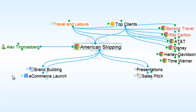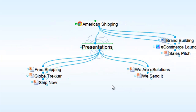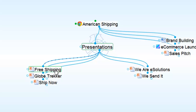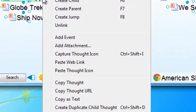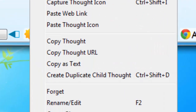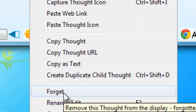In addition to linking to existing thoughts or changing thought links, we can also remove thought links. I have a series of presentations that I gave to this new client. Some of them were accepted and others were not. Free shipping was rejected by the client, and I no longer need this thought in my brain. I'll right-click and select to forget this thought.